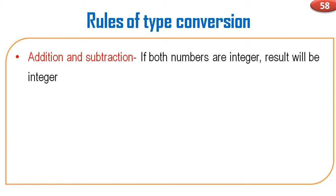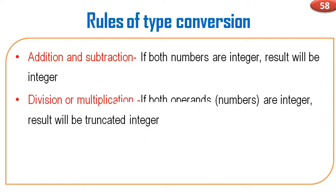Rules of type conversion — rules of data type conversion. In the case of addition and subtraction, if you want to add two numbers and both numbers are integer, the result will be integer. The same case applies for subtraction also. In the case of division or multiplication, if both operands are integers, the result will be a truncated integer.